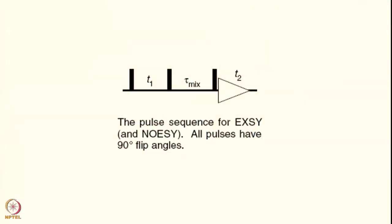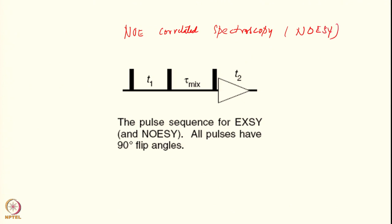Now we will look at another kind of transfer process which is based on the dipolar interaction. The dipolar interaction leads to what we call the nuclear Overhauser effect, which is the NOE. NOE correlated spectroscopy, briefly written as NOESY, is also called exchange spectroscopy. The mechanism of transfer through exchange gives the same appearance of peaks, and this is called EXSY.